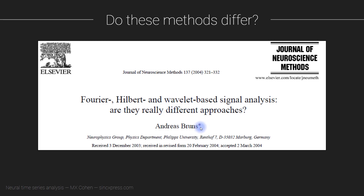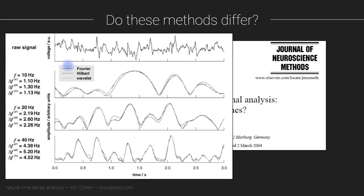Several people have investigated more rigorously whether these methods give different or the same results. This is one such paper. The idea was to analyze the same data using the short-time Fourier transform, filter-Hilbert, and complex Morley wavelet convolution. Here you see some example results: the raw data signal, and power time courses from short-time Fourier, filter-Hilbert, and wavelet convolution. These three time series are not exactly identical, but they are really, really similar. The question isn't whether these overlap perfectly — it's whether you would arrive at different conclusions about the data. And in these cases, with three different frequencies, the answer is clearly no.